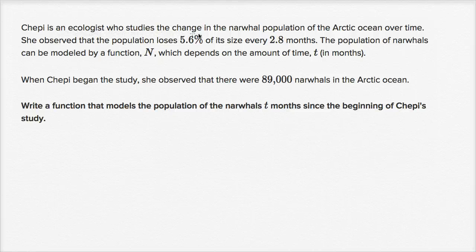Chepi is an ecologist who studies the change in the narwhal population of the Arctic Ocean over time. She observed that the population loses 5.6% of its size every 2.8 months. The population of narwhals can be modeled by a function n, which depends on the amount of time t in months. When Chepi began the study, she observed that there were 89,000 narwhals in the Arctic Ocean. Write a function that models the population of narwhals t months since the beginning of Chepi's study.